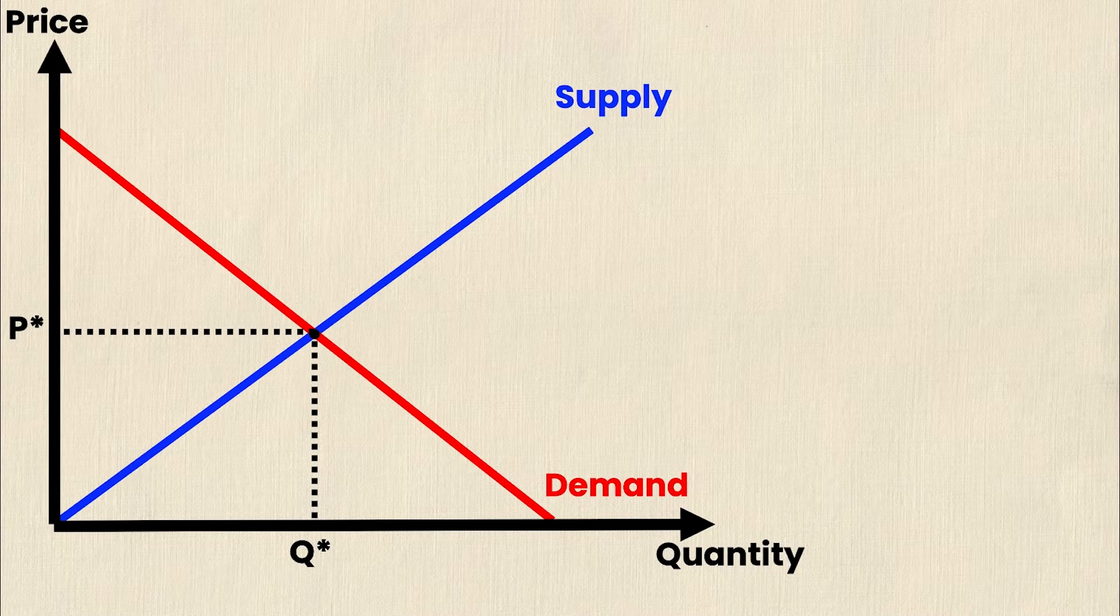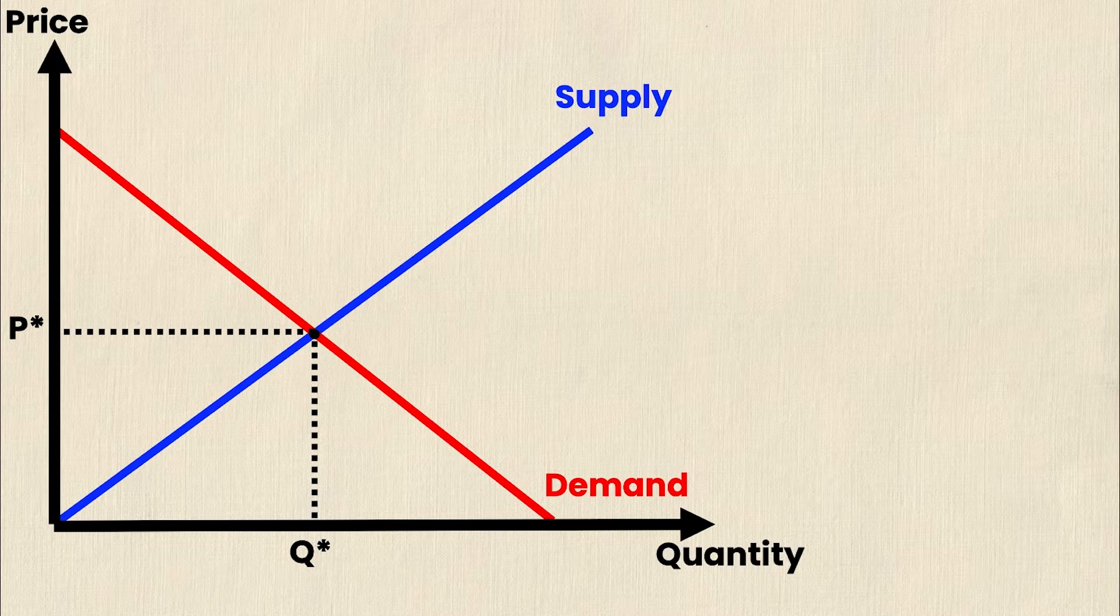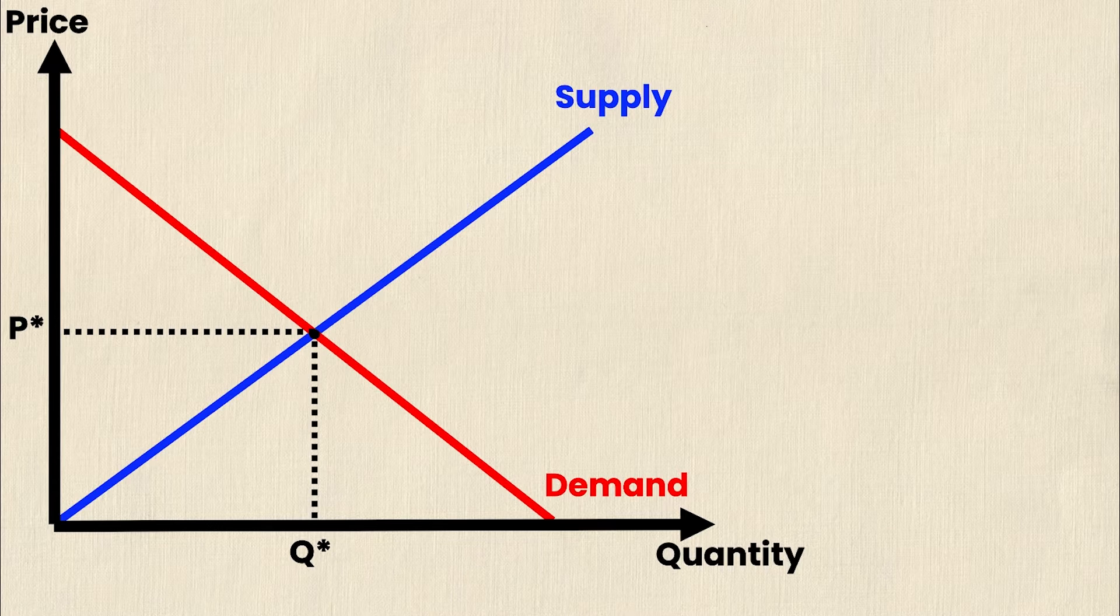So I've just labeled my P star, Q star, the two axes, and my two curves. Now that I've drawn this general supply and demand graph out I'm now ready for my supply and demand equations to come into play. So let's take a look at them.